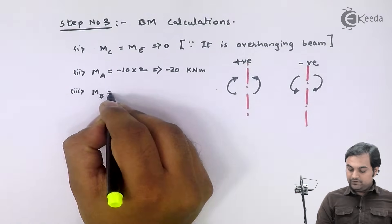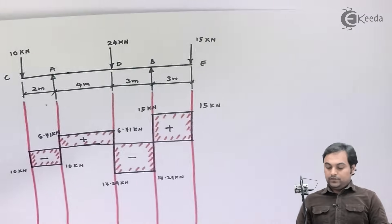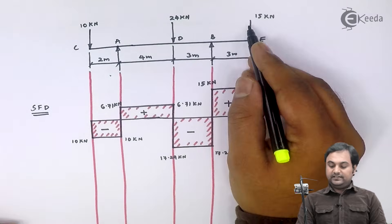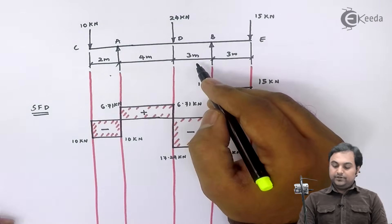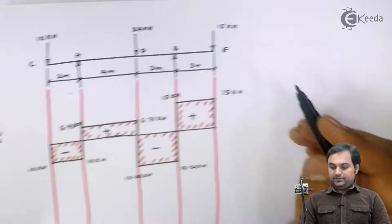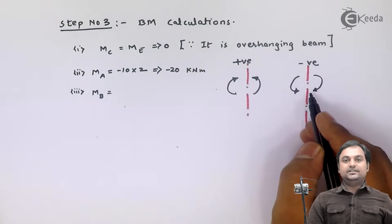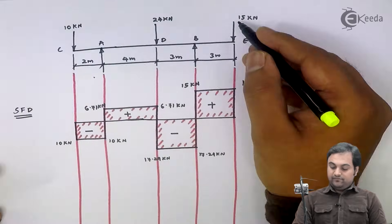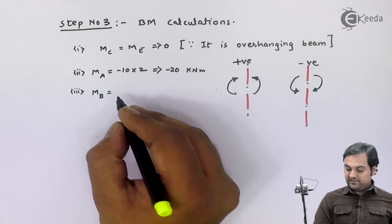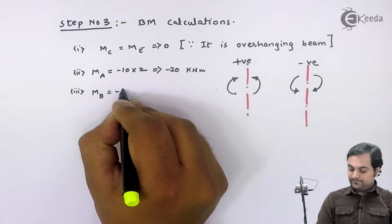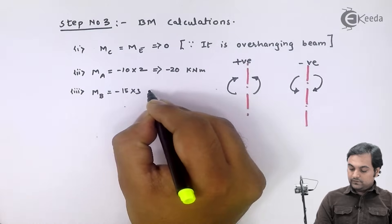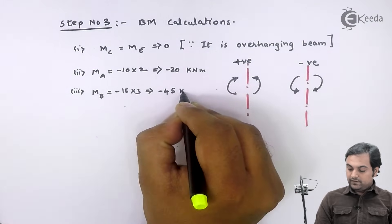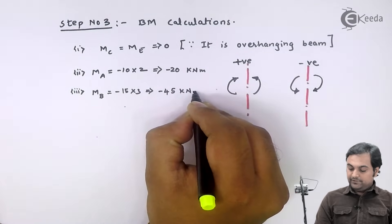Next, bending moment at point B. Taking the section at B, to the right I have 15 kN producing a clockwise moment. Clockwise moment to the right is negative. So moment at B equals minus 15 into 3, which gives minus 45 kNm.